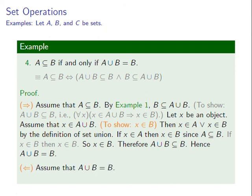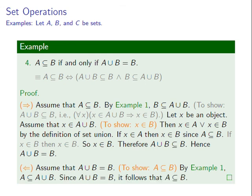For the converse, assume that A union B is equal to B. Our goal is to show that A is a subset of B. By Example 1, A is a subset of A union B. Since A union B is equal to B, it follows that A is a subset of B. This completes the proof.